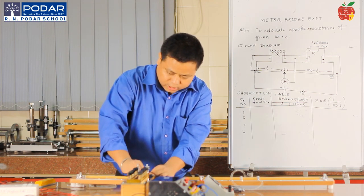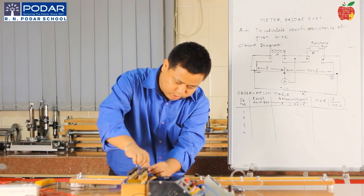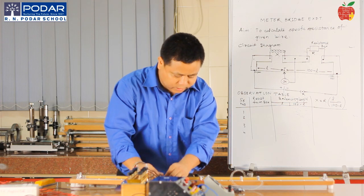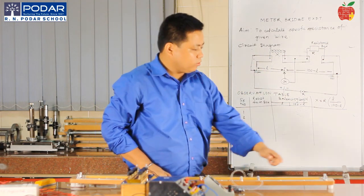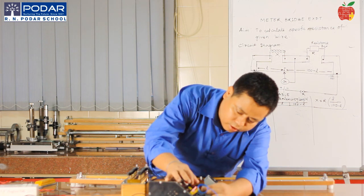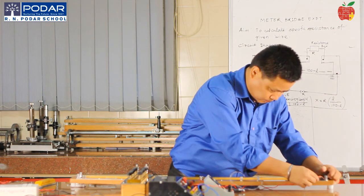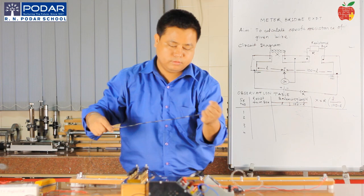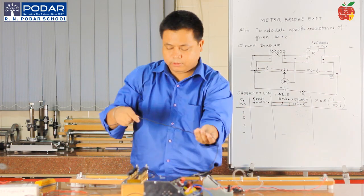When you are making the connection, please check that the connections should be tight; otherwise it will create error in the readings. I have connected the resistance in the right gap — this known resistance is connected in the right gap. The battery should be connected across the two ends of the meter bridge. The positive terminal of the battery supply is connected at one end, and the negative terminal is connected to the other end of the meter bridge.